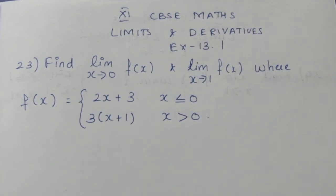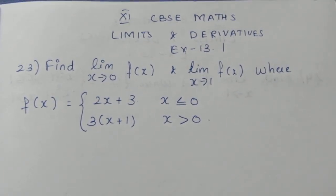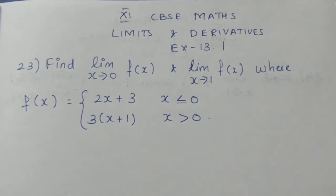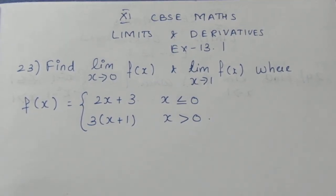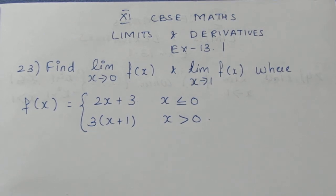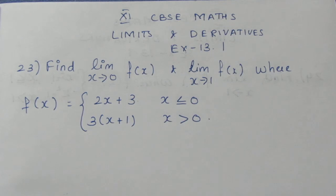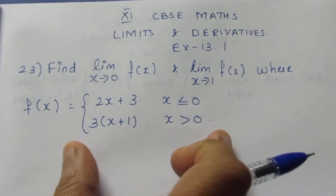Hello viewers, I am Ikely. In this Class 11 CBSE Maths Limits and Derivatives exercise 13.1, question 23, we will talk about the question: Find limit x tends to 0 of f(x) and limit x tends to 1 of f(x), where f(x) equals 2x plus 3 when x is less than or equal to 0, and 3 times (x plus 1) when x is greater than 0.